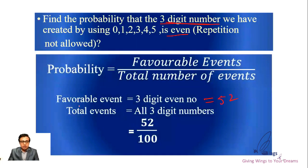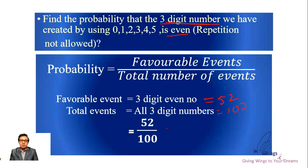The total events for three-digit numbers is 100. So when you divide, you get the answer 52 by 100. If you know permutation and combination, you can easily calculate this. In fact, most problems in probability can be calculated using permutation and combination.